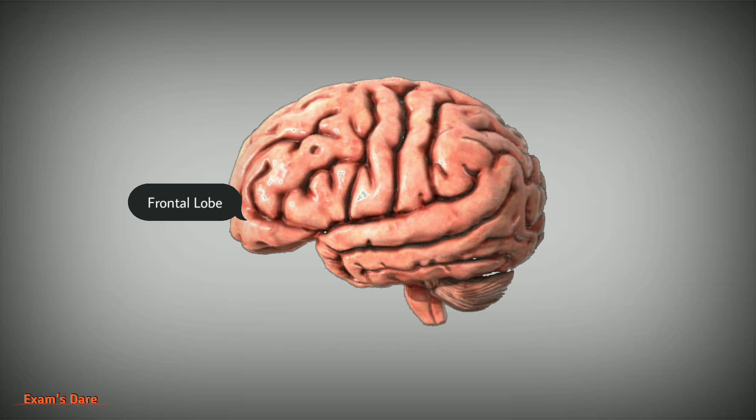Parietal lobe is located posterior to the frontal lobe. It is responsible for receiving sensory input, also called sensory cortex. Occipital lobe is the most posterior portion of the cerebrum.